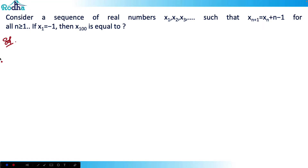Let's look at this question from CAT 2021 Slot 3 — a very good question on series. The question says: consider a sequence of real numbers x1, x2, x3 such that x(n+1) is equal to xn plus n minus 1, for all n greater than or equal to 1. If x1 equals minus 1, then what is the value of x100?